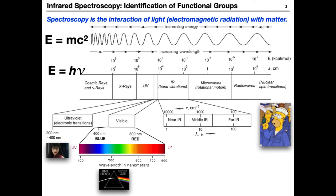Spectroscopy is the interaction of light — electromagnetic radiation — with matter. On the electromagnetic spectrum, on one end we have really long wavelength light: radio waves. As we go from right to left, we go from radio waves to microwaves to IR to visible, to UV, X-ray, and cosmic rays. As we proceed from right to left, the wavelength — defined as crest to crest or trough to trough — progressively gets shorter and shorter.